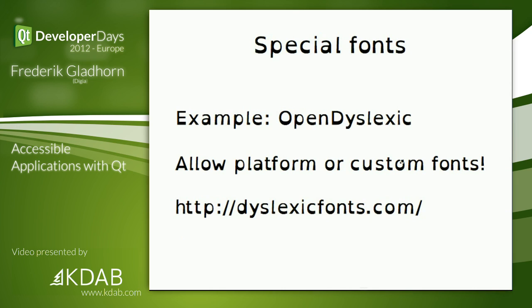One interesting example is for people with dyslexia — font settings. There are special fonts; OpenDyslexic is one of those. It has a certain gravity so the letters won't turn around, which is a problem for dyslexia. P and B tend to end up being the same letter, which makes reading very hard. With this kind of font, some people can use the computer much better. That's why it's important to respect system settings — if you can, use system colors and fonts.